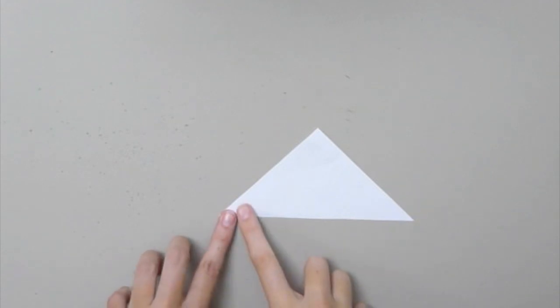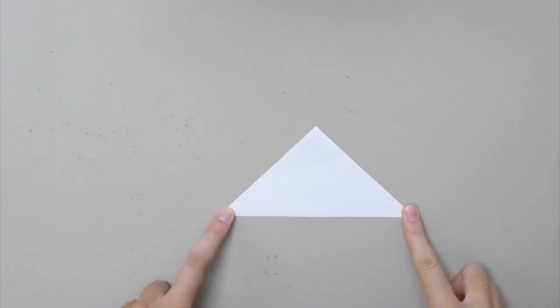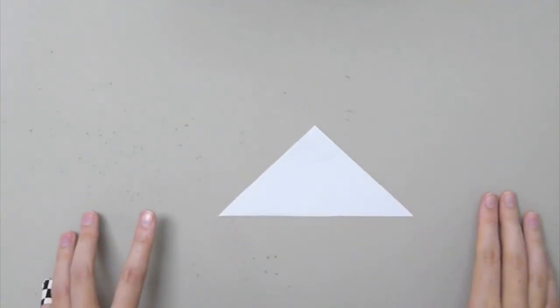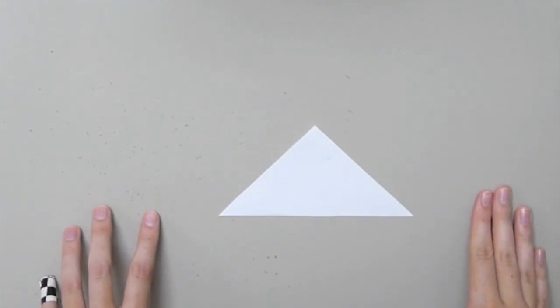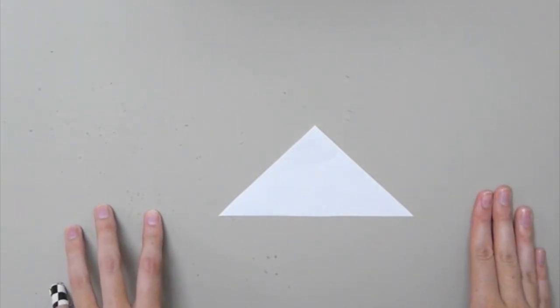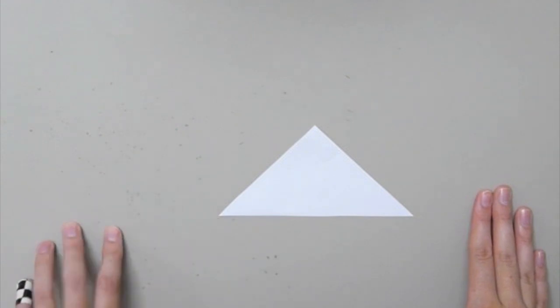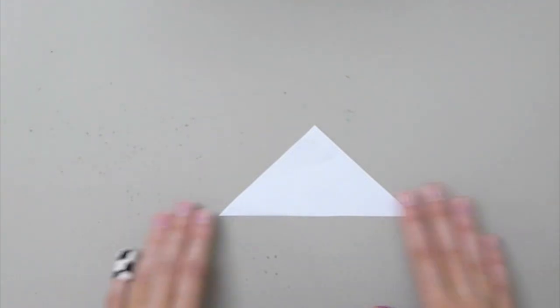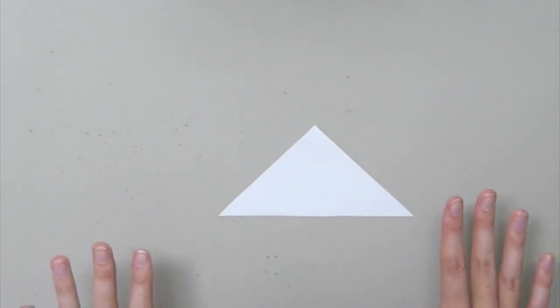I'm going to write my name inside the triangle with bubble letters. Now, some people's names are really long. If you have a nickname, you're more than welcome to do so. If you have a last name that's short, you can do your last name. But let's go over how to do bubble letters real quick.